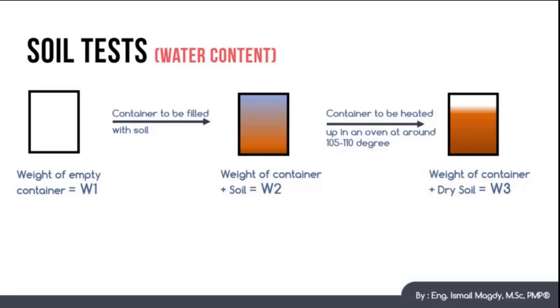After that, the water content could be calculated as the weight of the water over the weight of the dry soil, so it will equal W2 minus W3 in order to get the weight of the water over W3 minus W1 in order to get the weight of the soil dry, all multiplied by 100 to get the percentage.